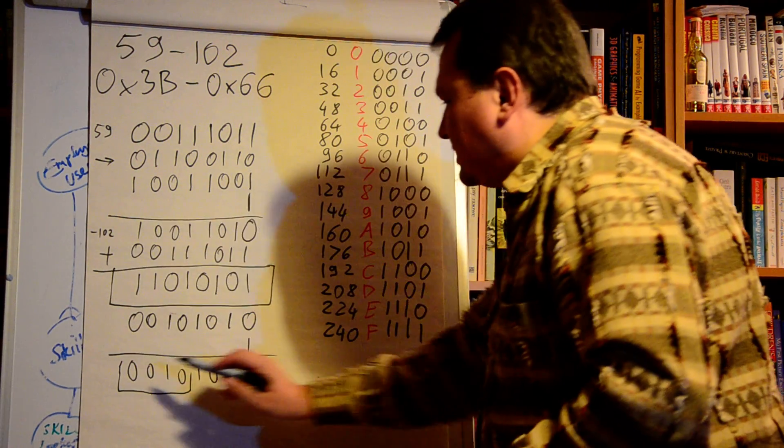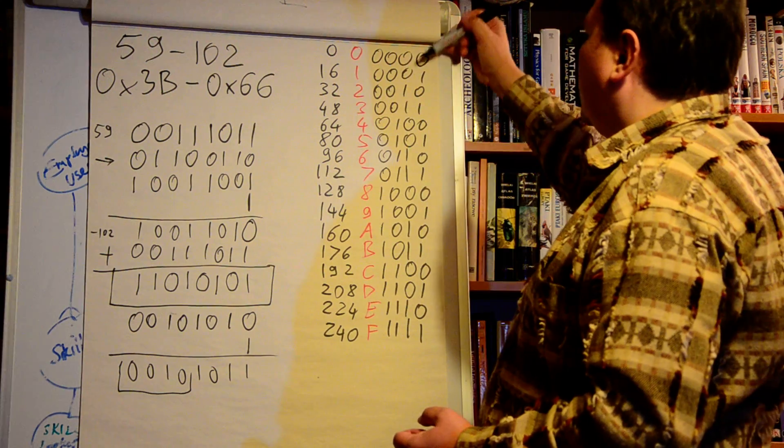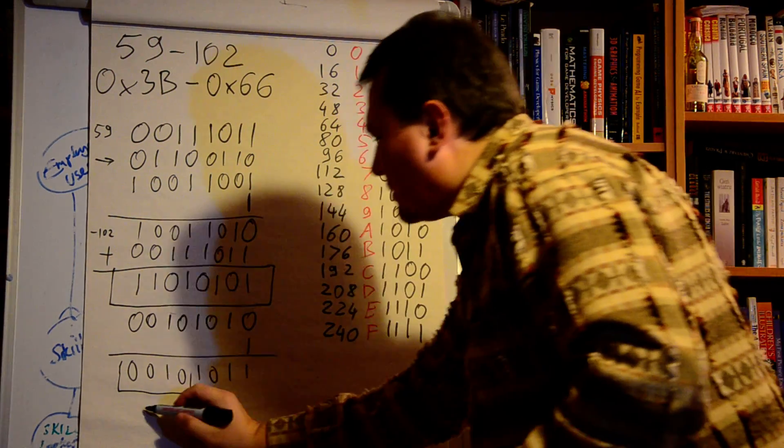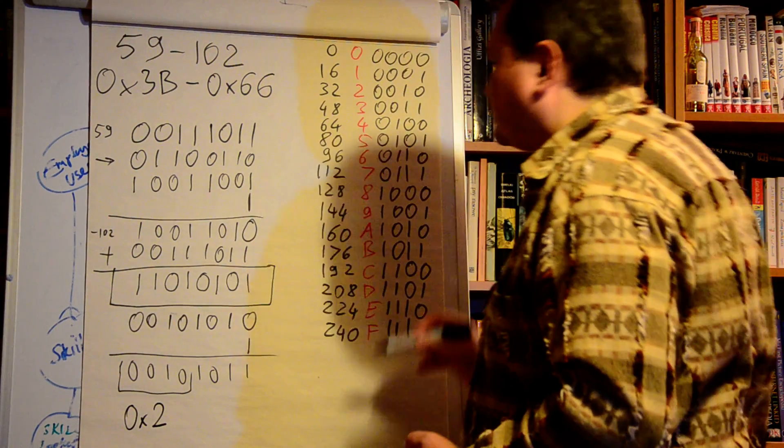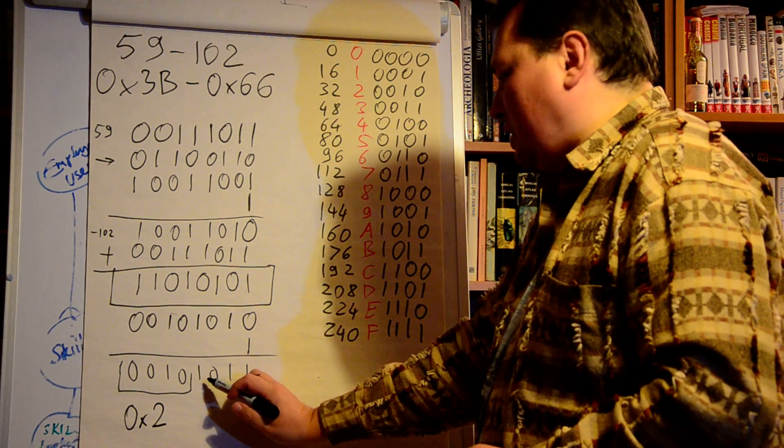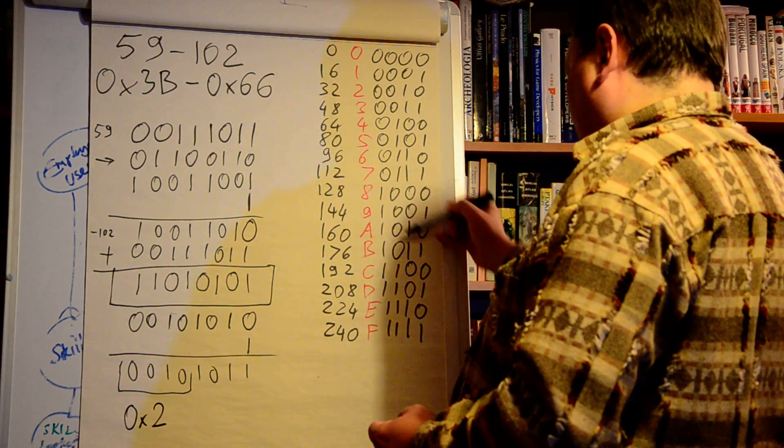This group of four digits, 0010, is hexadecimal 2, and this group, 1011, is B. So we have 0x2B.